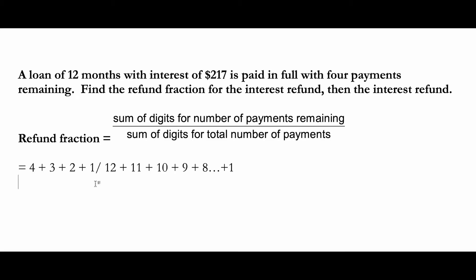This seems like a very lengthy process, but I'm going to show you a shortcut to calculate the numerator and the denominator. Here you have four months remaining, so instead of doing 4 plus 3 plus 2 plus 1, you can do 4 multiplied by 5 divided by 2. This gives you the same answer — you can check it in your calculator. This is the quicker way to find the same answer.